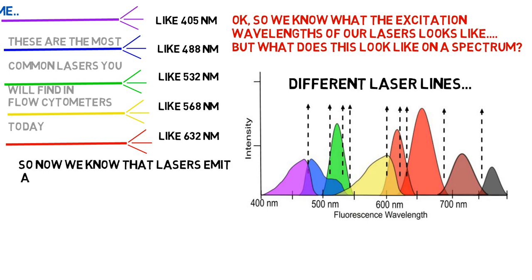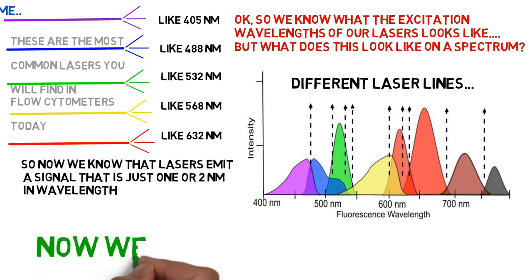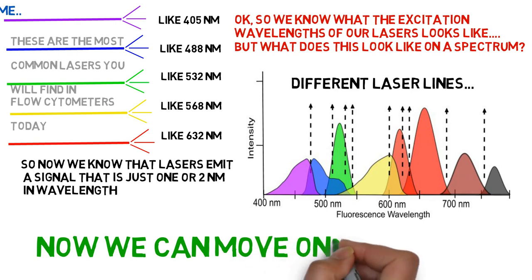Now we know we can use several lasers on a system to excite different fluorochromes. So we know something about the front end of the flow cytometer, the excitation side. What about the emission side? Let's remind ourselves what fluorescence is.